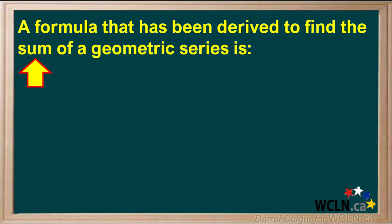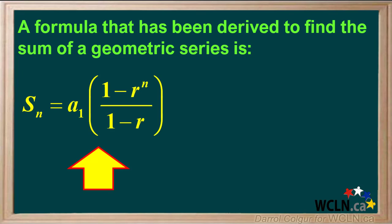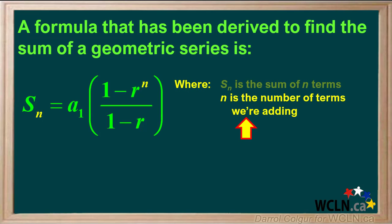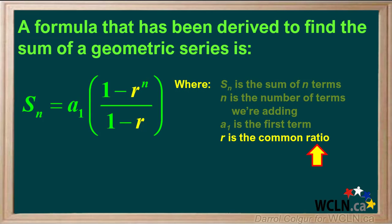A formula that has been derived to find the sum of a geometric series is this. Where Sn is the sum of N terms, N is the number of terms we are adding, A1 is the first term, and R is the common ratio.